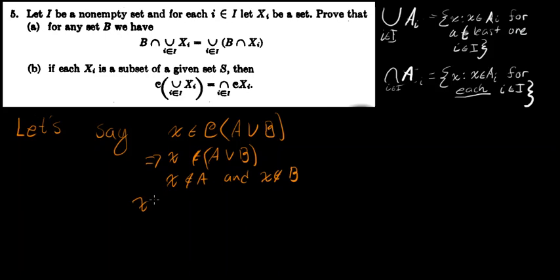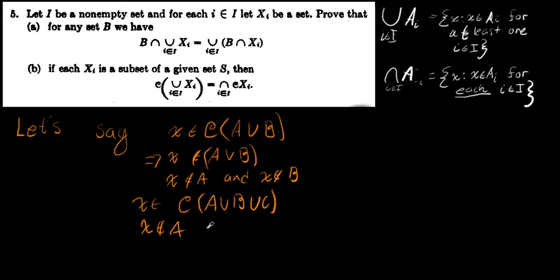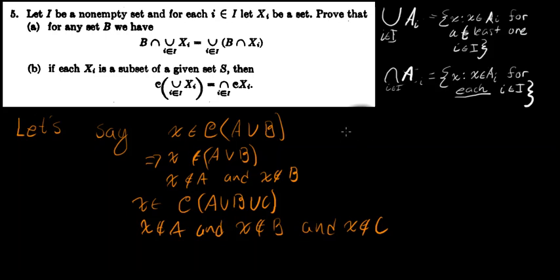Similarly, if x is in the complement of A union B union C, then that means x is not in any of the sets in that family of sets.